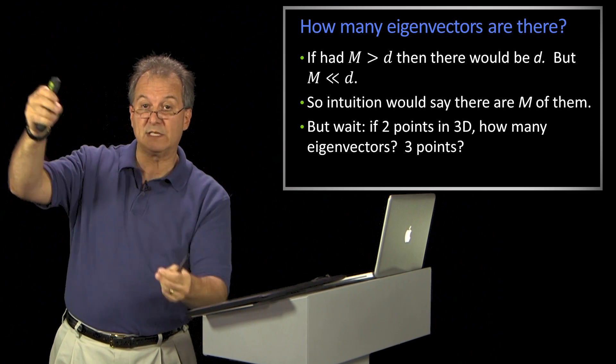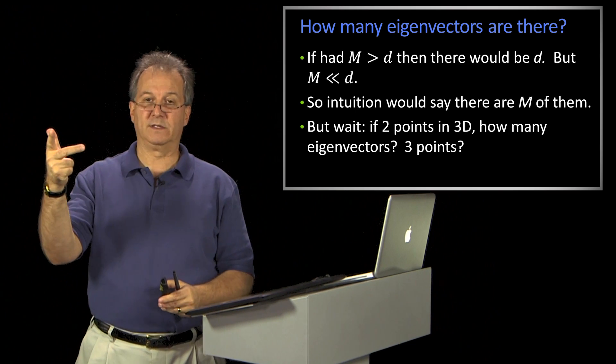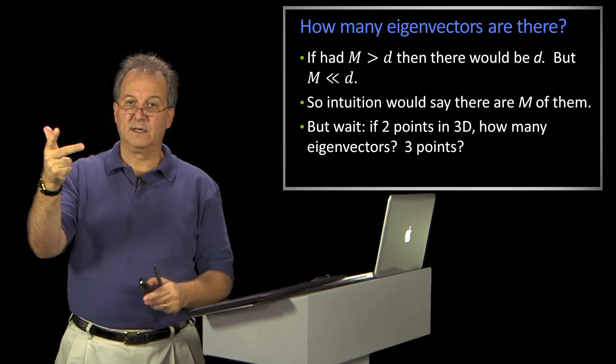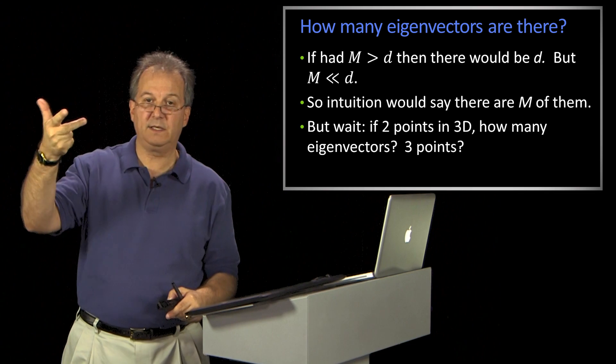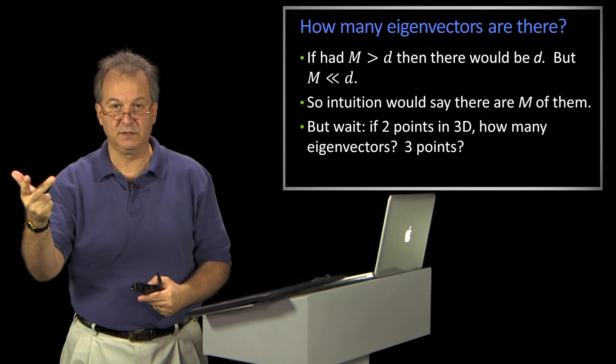So with two points, there's only one possible eigenvector. Let's think about it this way. If I have three points in space, how many vectors does it take to span those points? Well, they lie in a plane, don't they? Of course they do. Three points defines a triangle. So with three points, there's only two eigenvectors.